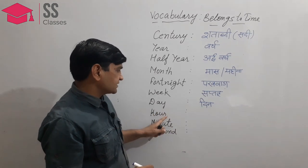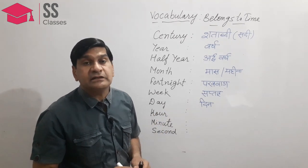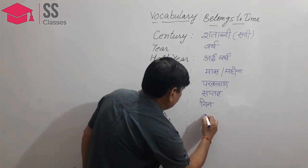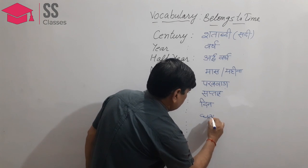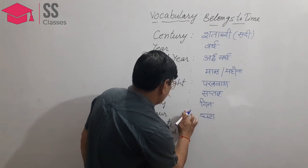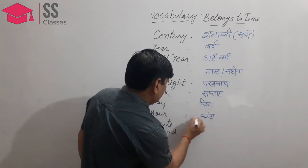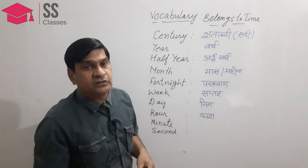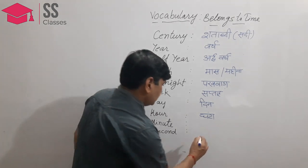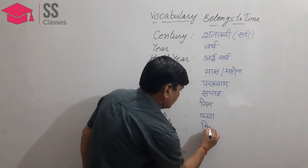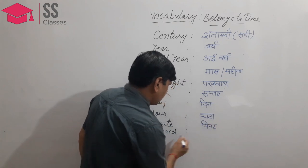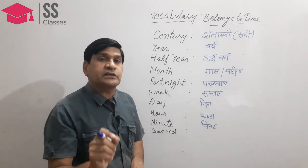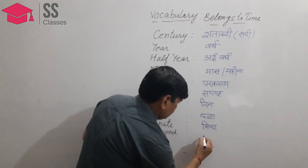Next, we go to hour — a period of 60 minutes. In Hindi, we say ghanta. Next is minute — a period of 60 seconds. In Hindi, we say minute itself. Our last word is second — it is the smallest unit of time.